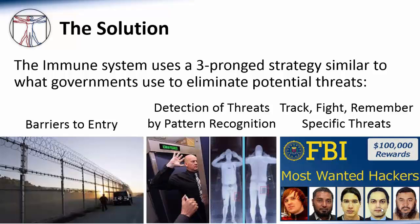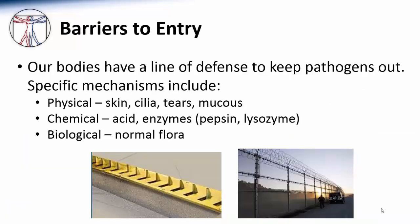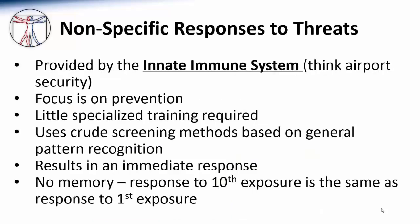The solution that evolution came up with is similar to what our government uses today. Just like the government has different agencies that each pursue a different defense strategy, our immune system has different compartments that each take a different approach to fighting pathogens. First, governments put up barriers to entry — you can't just stroll across national borders; you encounter a multitude of different physical and functional barriers. In the same way, our bodies are designed to bar the entry of pathogens using physical, mechanical, and chemical barriers. Second, governments have systems like airport security to recognize and respond to non-specific threats. In our bodies, this function is provided by the innate immune system.